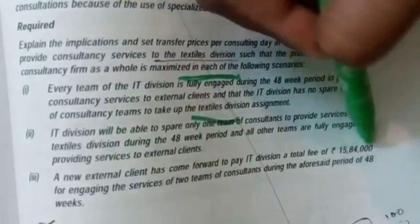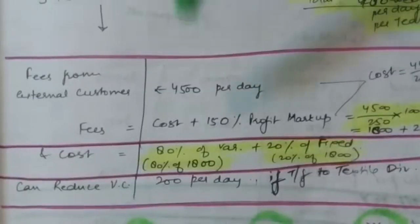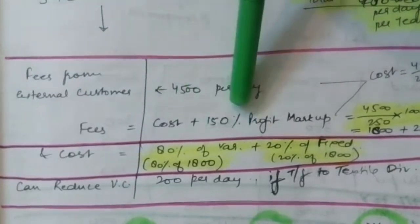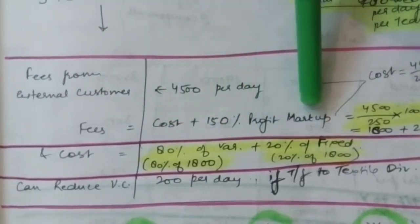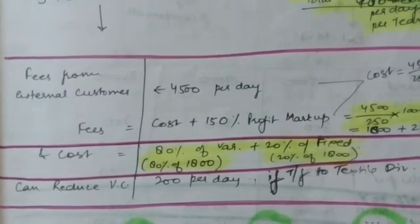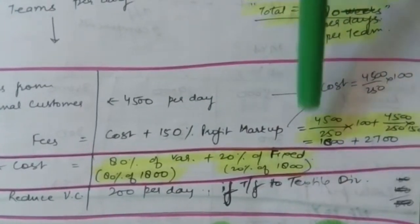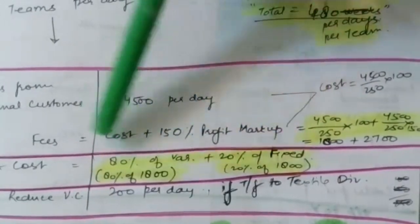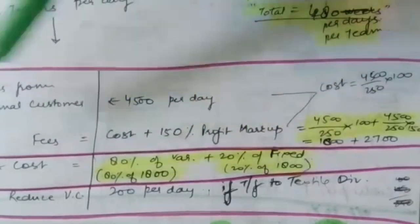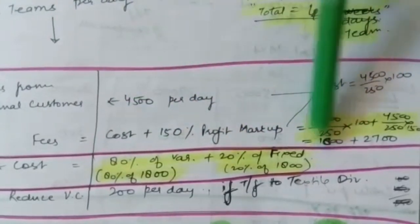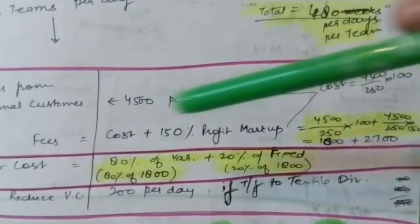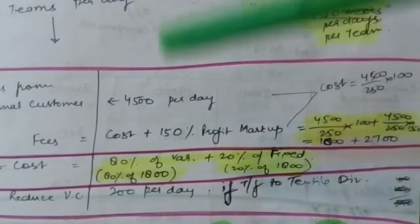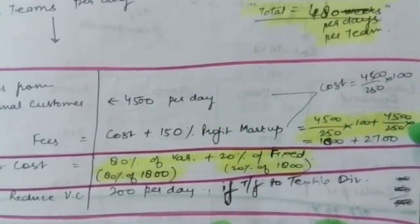For the external customer, the charge is $4,500 per consulting day. Breaking this down using a cost plus 150% profit markup as given in the question: $4,500 divided by 250 (since 100 cost plus 150 profit equals 250) and multiplied by 150 gives profit of $1,800. So cost is $2,700 and profit is $1,800. The cost of $2,700 is 80% variable and 20% fixed.